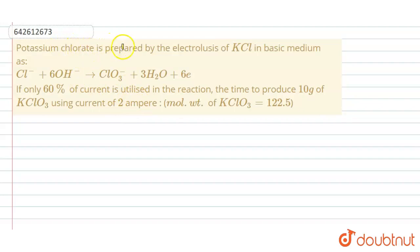Potassium chlorate is prepared by the electrolysis of KCl in basic medium. Cl- plus 6OH- converts to ClO3- plus 3H2O plus 6 electrons. If only 60 percent of current is utilized in the reaction, the time to produce 10 gram of KClO3 using current of 2 ampere is... Molecular weight of KClO3 equals to 122.5.